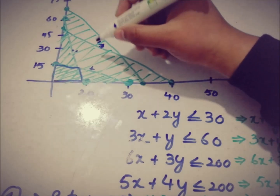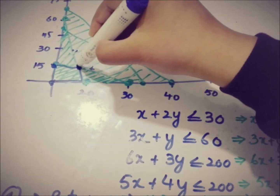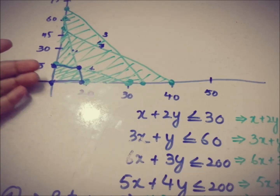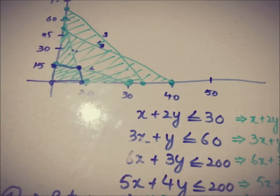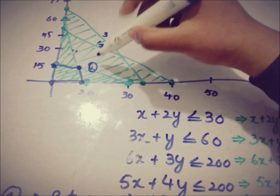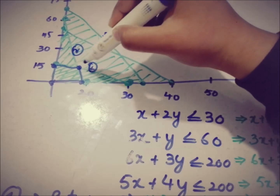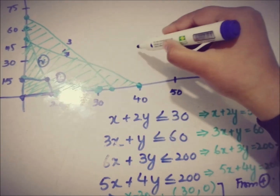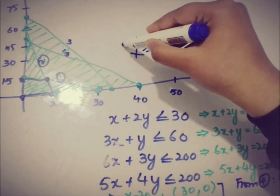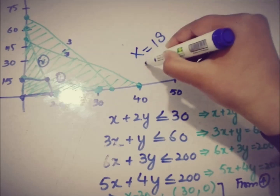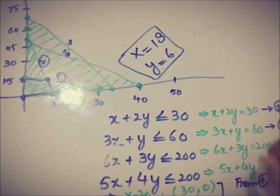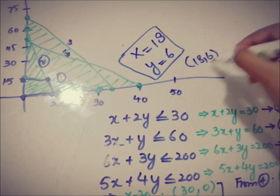The next step is to find the corner points of this shaded area. It has four points. The origin is (0, 0). We also have (0, 15) and (20, 0). The fourth point is the intersection of the first and second constraints. Solving the two equations simultaneously, we get x equals 18 and y equals 6 — since the diagram is not exact. So this point is (18, 6).